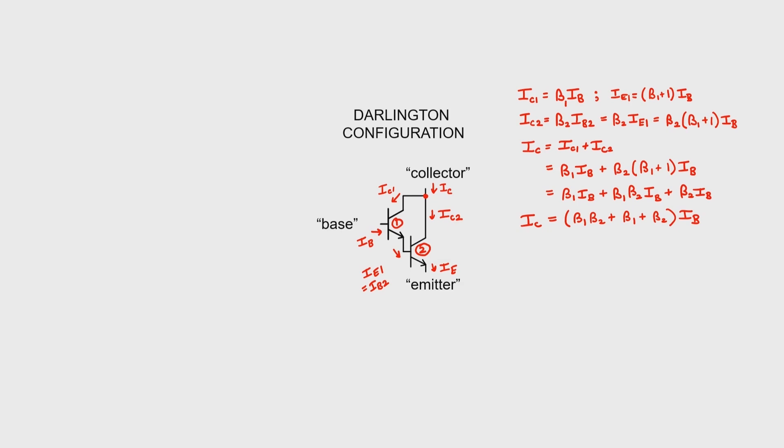We can now take note that IB is the base current going into the whole set. IC is the collector current going into the whole set, and I sub E is the emitter current coming out of the whole set. We could then call this beta effective in order to treat the set of two transistors like a single transistor.